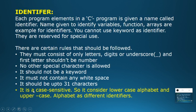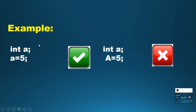The sixth rule is: identifiers are case sensitive. The compiler differentiates between uppercase and lowercase letters. For example, if I declare 'int a' and assign 'a = 5' it will accept, but if I declare 'int a' and then try 'A = 5', it cannot recognize capital A and will say 'please declare A'.